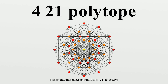The 56 nearest neighbors of a vertex — namely the 28 obtained by permuting coordinates one way and 28 by permuting another — are the vertices of a 321 polytope in seven dimensions. Each vertex has 126 second nearest neighbors: 56 obtained by permuting one set of coordinates and 70 by permuting another. These 126 points are the vertices of a 231 polytope in seven dimensions.